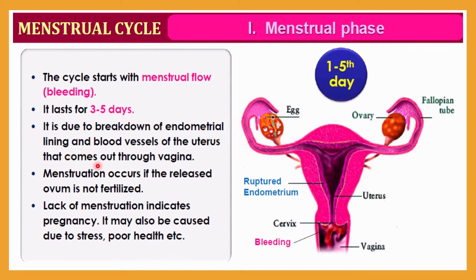Menstruation is due to breakdown of the endometrial lining and blood vessels of the uterus, which come out through the vagina. Menstruation occurs only if the released ovum or secondary oocyte is not fertilized. Lack of menstruation may indicate pregnancy, or it may be caused by stress, poor health, poor hygiene, or lack of nutrition.